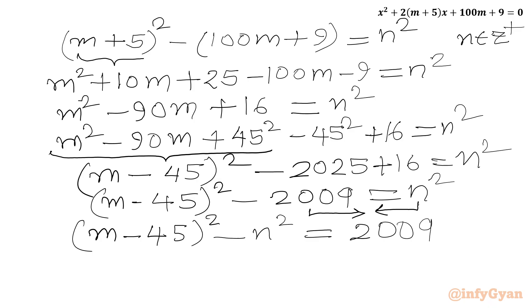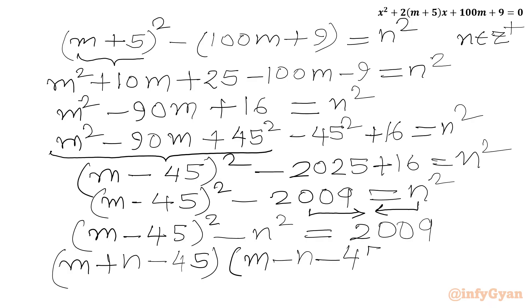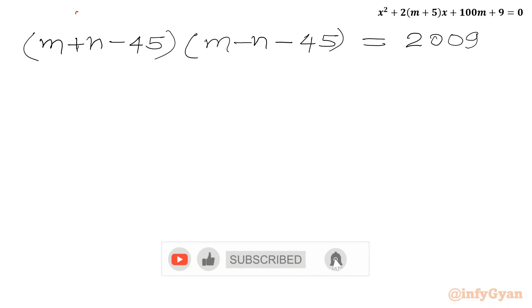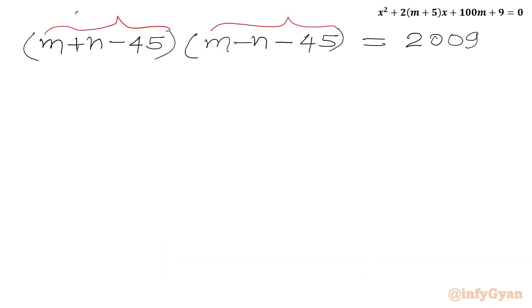Now we apply the difference of squares identity: (m + n - 45)(m - n - 45) = 2009. Note that (m + n - 45) is greater than (m - n - 45), so the first bracket is always the larger factor.